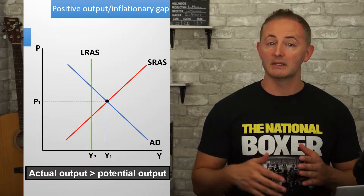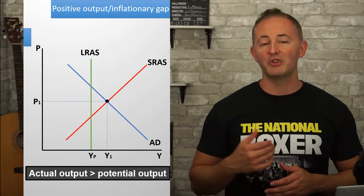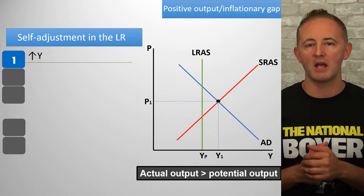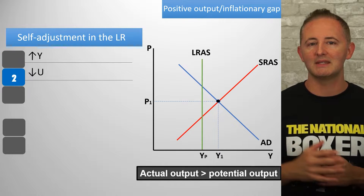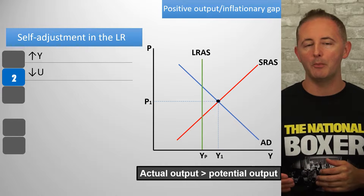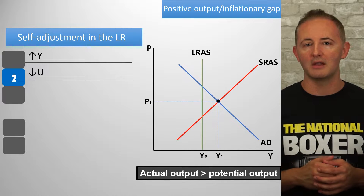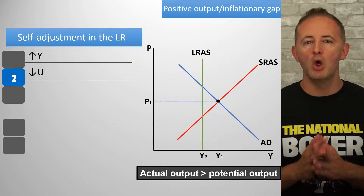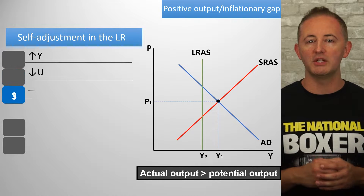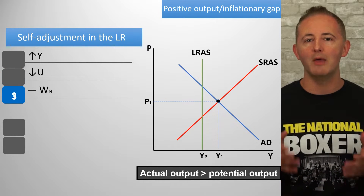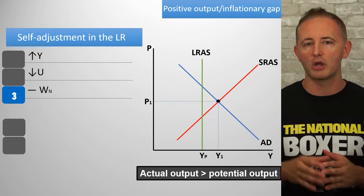Nominal wages are slow to rise when unemployment is low, and that's the exact scenario we have here. If you're taking notes, copy this process to show how the economy self-corrects. As a result of the increase in output, we have a decrease in unemployment, and now unemployment is below the natural rate. Real GDP and unemployment are negatively related. In the short run, nominal wages are unchanged, and this is why businesses can afford to hire more workers.